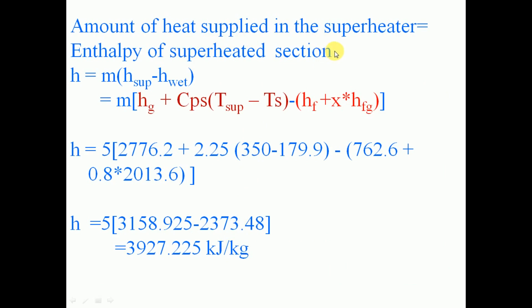The steam is initially in the wet condition. It is heated through the saturated condition, and then further heated to the superheated condition in the superheater. We need to find how much heat is supplied only in the superheater section. For 5 kg of steam, H equals the mass of steam multiplied by the superheated steam enthalpy minus the wet steam enthalpy.